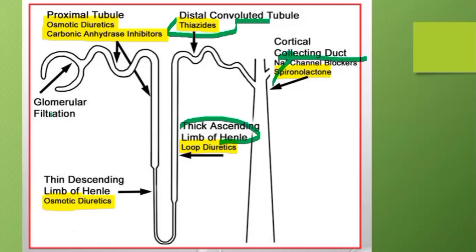There are a few other things to add. One is osmotic diuretics — for example, mannitol. Mannitol acts on the thin ascending limb of the loop of Henle. Mannitol is used in cerebral edema and causes osmotic diuresis. Just remember four things: thiazide acts on the distal convoluted tubule; loop diuretics (furosemide) act on the thick ascending limb; spironolactone acts on the collecting duct; mannitol acts on the thin ascending limb.